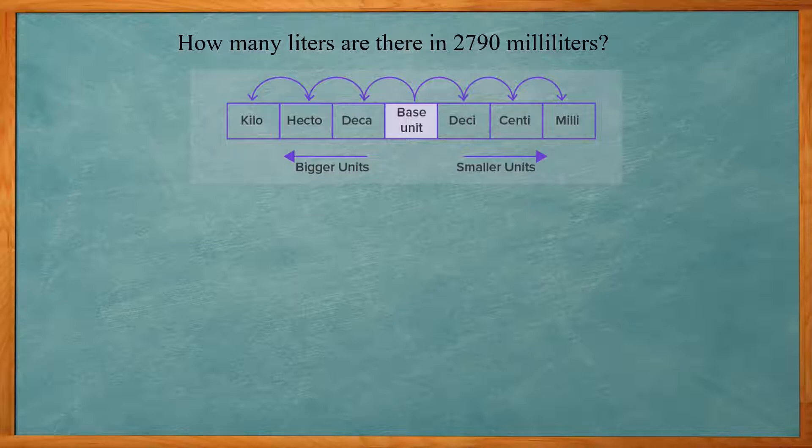Now, if we multiply by 10, we get decaliters, deca. Multiply by 100, we get hecto, hectoliters. And multiply by 1000, we get kiloliters.